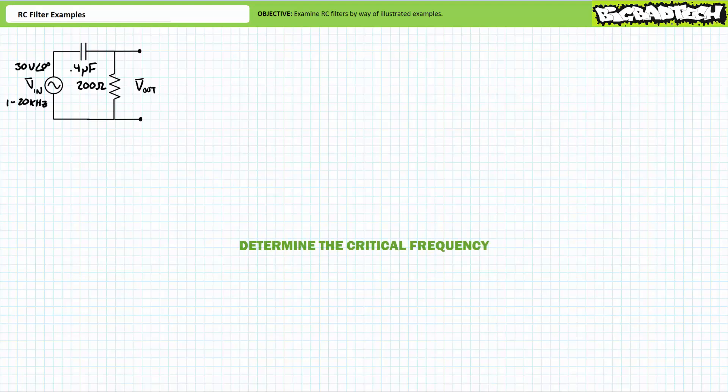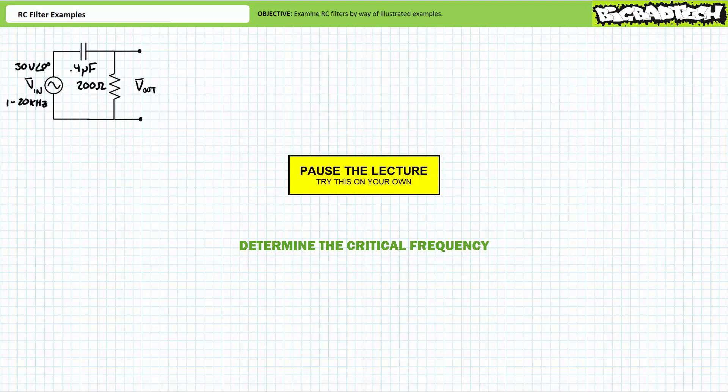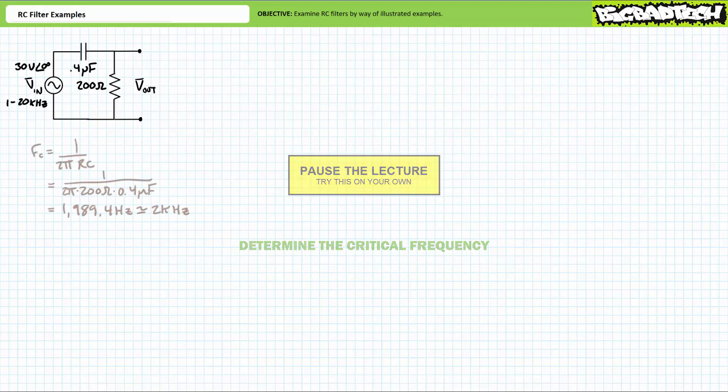The second question: what's the critical frequency for this circuit? By all means pause the lecture and try this on your own. The critical frequency represents an occasion in which the magnitude of ZR equals the magnitude of ZC. F_c, the critical frequency, equals 1 over 2πRC. Substituting our given values, we find F_c to be equal to approximately 1,989.4 hertz — super close to 2 kilohertz.